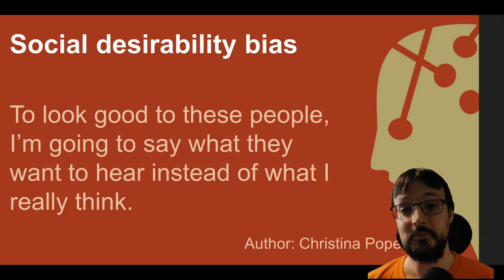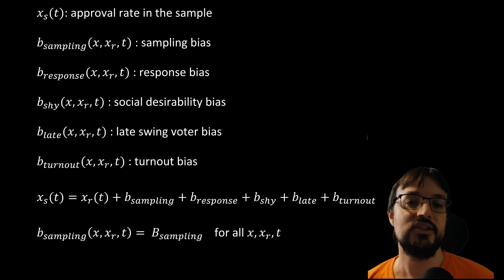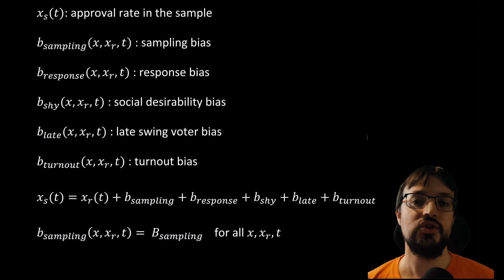Then there is social desirability bias. Sometimes people may not fully disclose their preferences. This could happen if they feel that their views may be judged. We indicate social desirability bias with a function called b_shy(x, x_r, t).